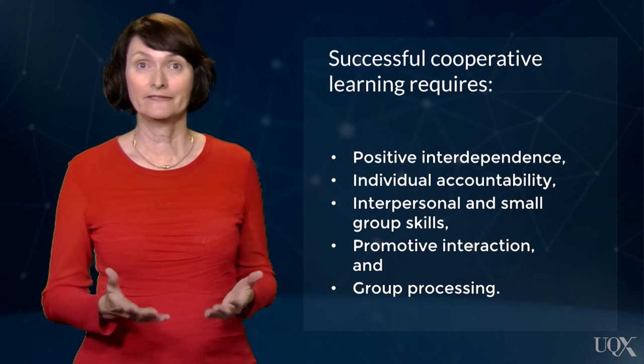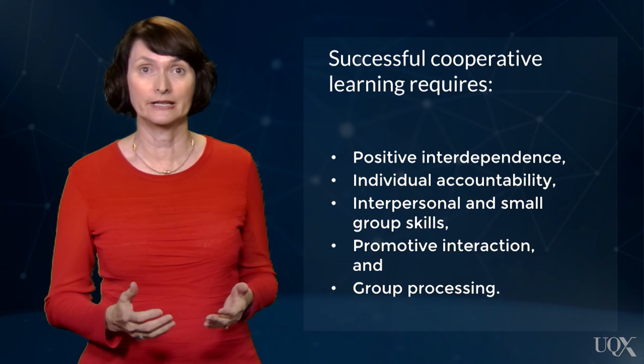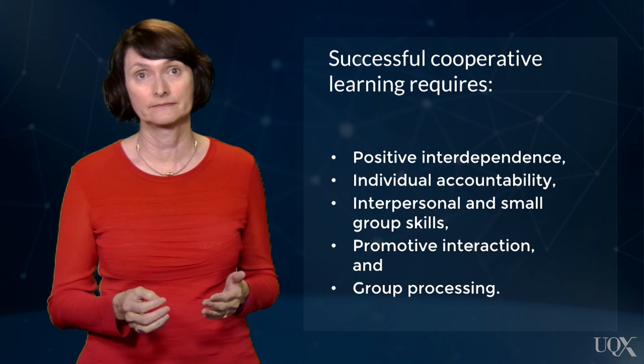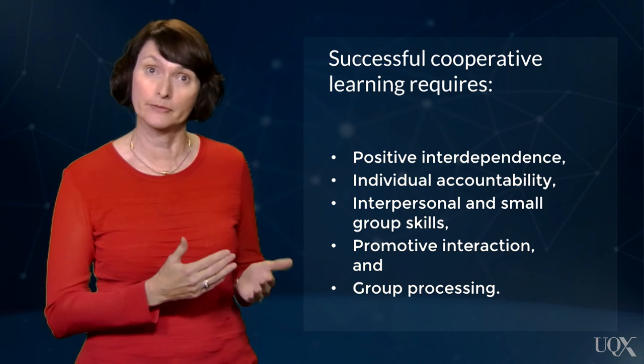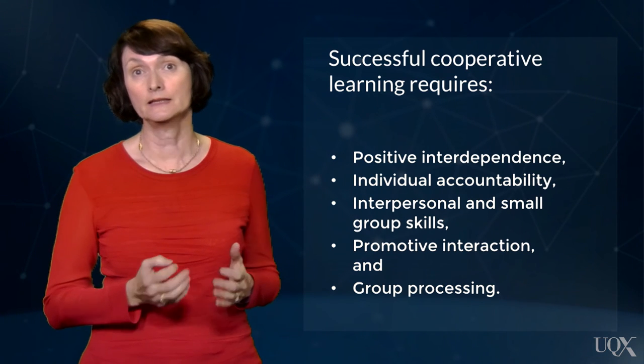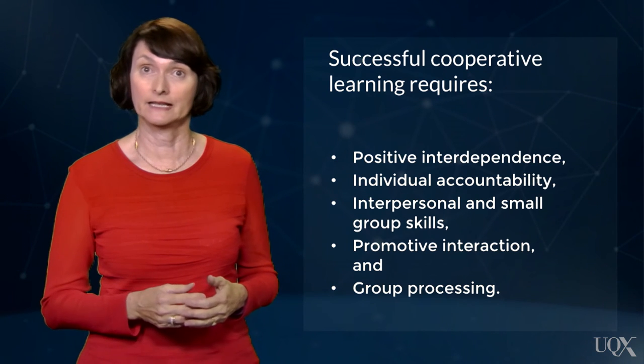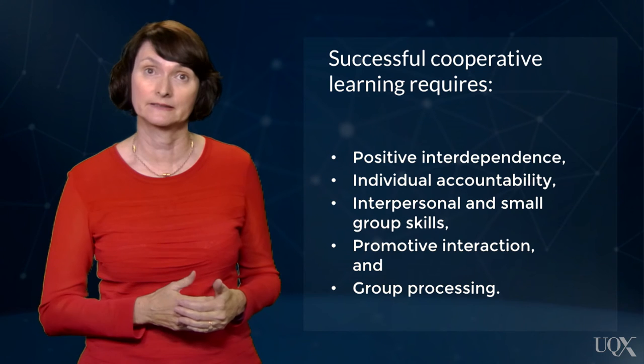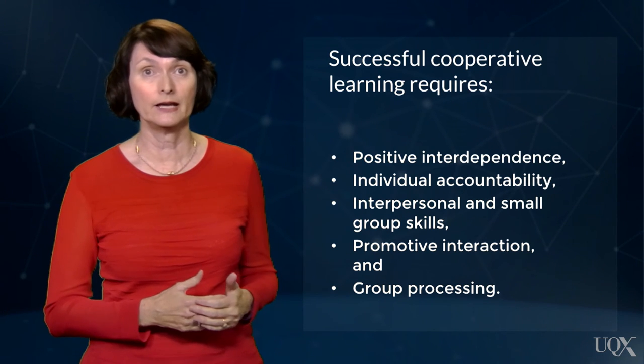Robin Gillies highlighted strong links between cooperative learning and deep engagement. Robin described cooperative learning as structured and carefully planned activities that involve students working together to accomplish shared goals. It is this sense of interdependence that motivates group members to help and support each other. Robin outlined five key elements critically important for successful cooperative learning: positive interdependence, where group success depends on all members' contributions; individual accountability; interpersonal and small group skills such as active listening and taking turns; promotive interaction, where students encourage each other's efforts; and group processing, where members evaluate how well their goals are being met.